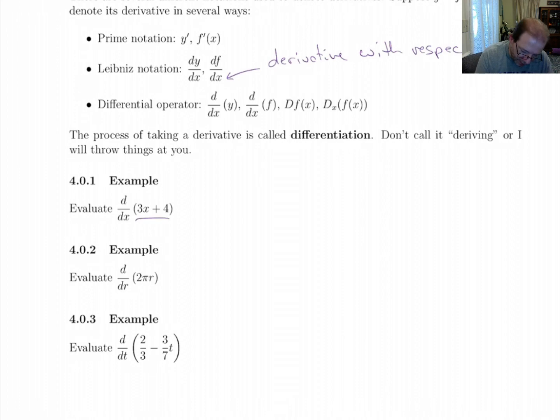The derivative of 3x plus 4 is 3, because this is just a linear function.